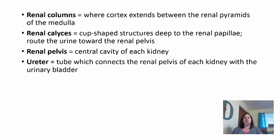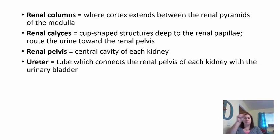The renal columns are where the cortex extends between the medulla. We also have the renal calices — cup-shaped structures deep to the renal papillae — where the route of urine goes toward the renal pelvis and is collected. This leads to the renal pelvis, which is the central cavity of each kidney, connecting to the ureter — the tube that connects the renal pelvis to the urinary bladder.